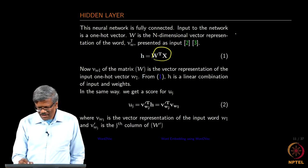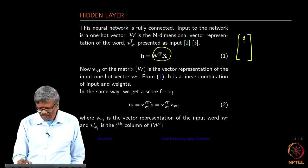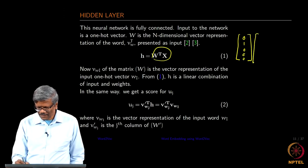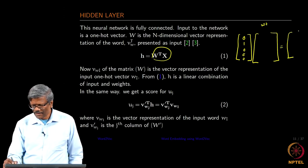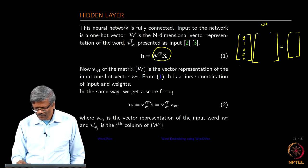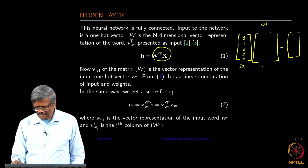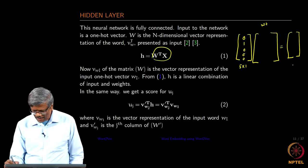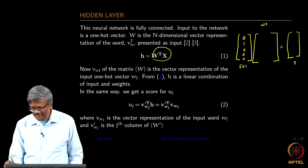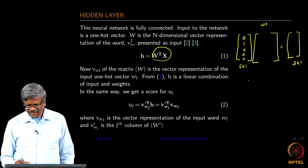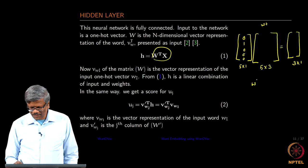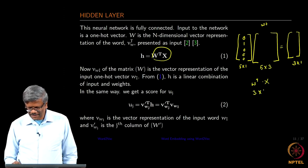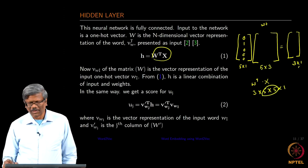In this case you have the one-hot vector and then you have the weight vector and what you want to find is h. Let us say the one-hot vector is 5 by 1 and we want to have the hidden layer of size 3 by 1. Then the weight matrix is going to be a 5 by 3 matrix. What you do is W transpose into x, that is 3 by 5 into 5 by 1, which will give you 3 by 1.